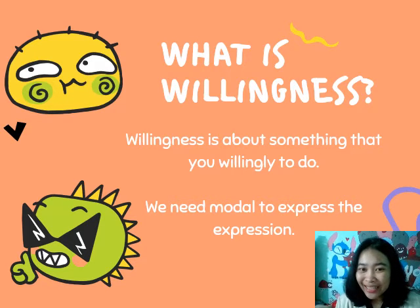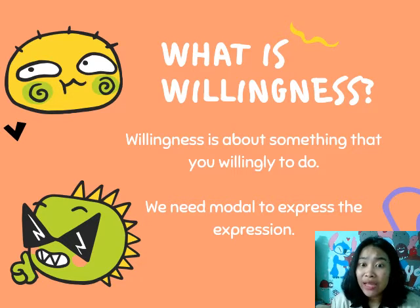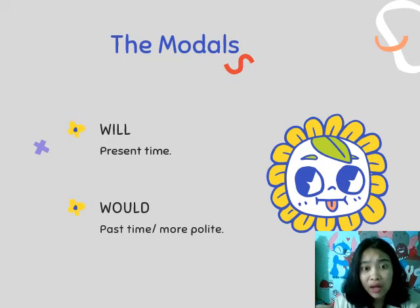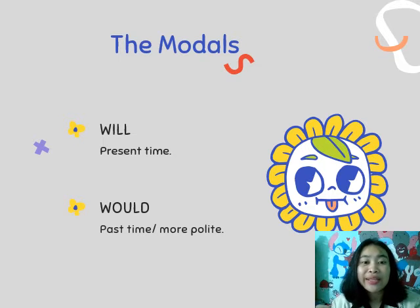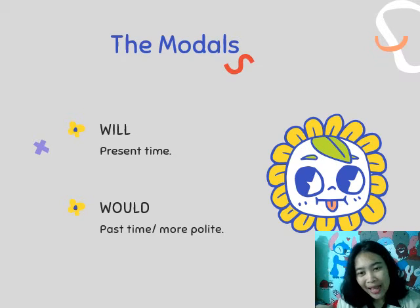What is willingness? Willingness is about something that you really want to do. We need a modal to express willingness. The modals we use are 'will' in present time, and 'would' for past time or to make a sentence sound more polite.